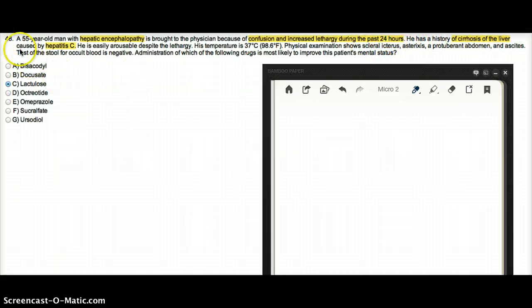He has a history of cirrhosis of the liver caused by hepatitis C. He is easily arousable despite the lethargy. His temperature is 37. Physical exam shows scleral icterus, asterixis, protuberant abdomen, and ascites.